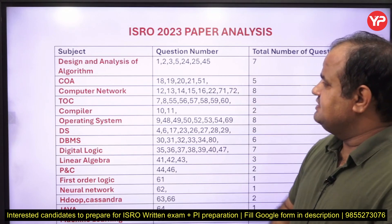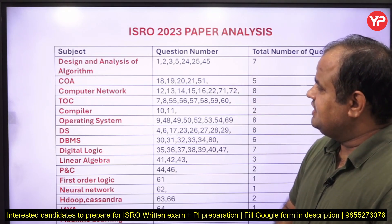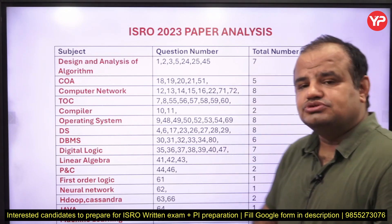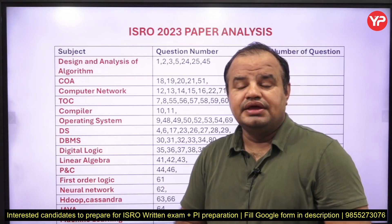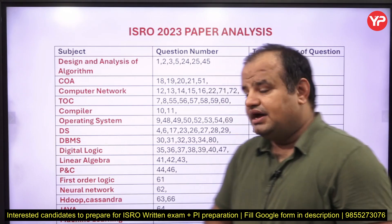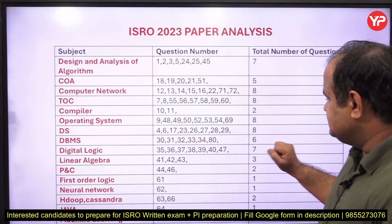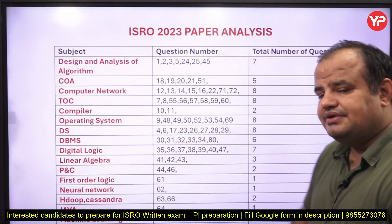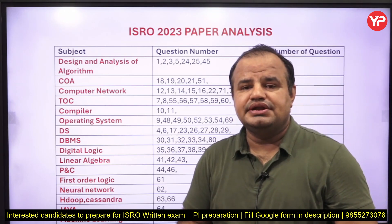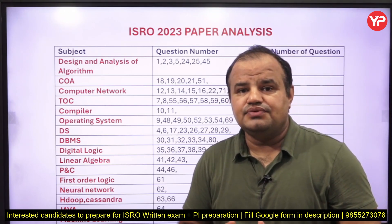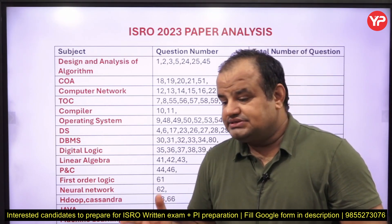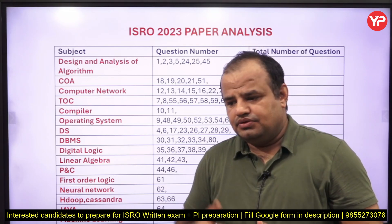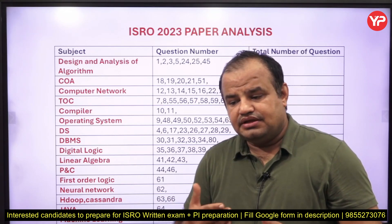In operating system and data structure they asked eight questions each, and if we merge with design and analysis of algorithms — eight plus seven — almost 15 questions out of 80 come from these areas. In data structure again eight questions: very simple questions related to trees, heap, and recursively performing operations in a program to find the final solution.